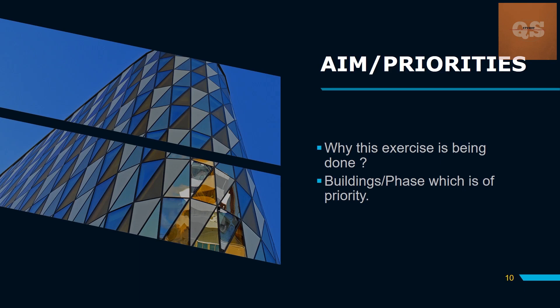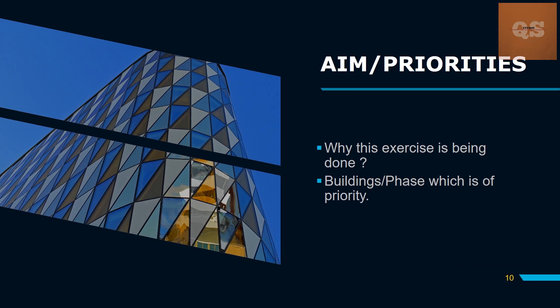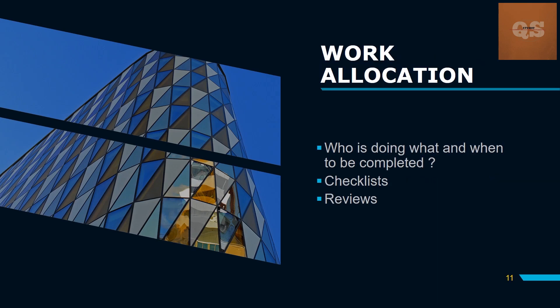The aim and priorities must be made clear. The aim depends on the stage — it might be a concept design budget, a final BOQ for tendering, or a comparison with a contractor for final billing. Priorities should identify which buildings or phases need to be completed first so that the right individuals can be allocated to those works and they can be managed effectively.